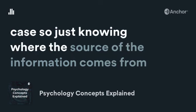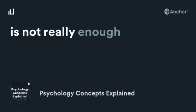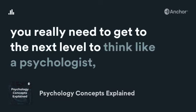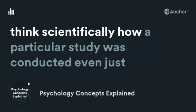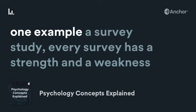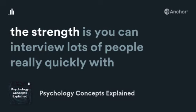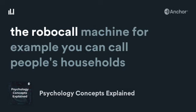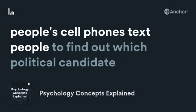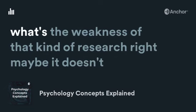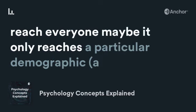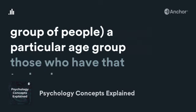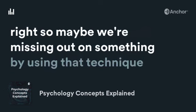Just knowing where the source of information comes from is not really enough. You really need to get to the next level — to think like a psychologist, to think scientifically about how a particular study was conducted. Even just one example: a survey study. Every survey has a strength and a weakness. The strength is you can survey lots of people really quickly with a robocall or texts to find out which political candidate people tend to prefer. But then you have to think about the weakness — maybe it doesn't reach everyone, maybe it only reaches a particular demographic, a particular age group, those who have that technology. So maybe we're missing out on something by using that technique.